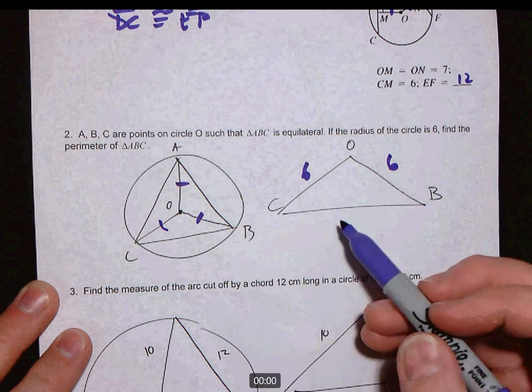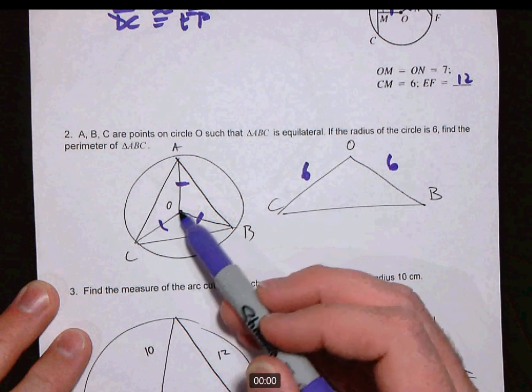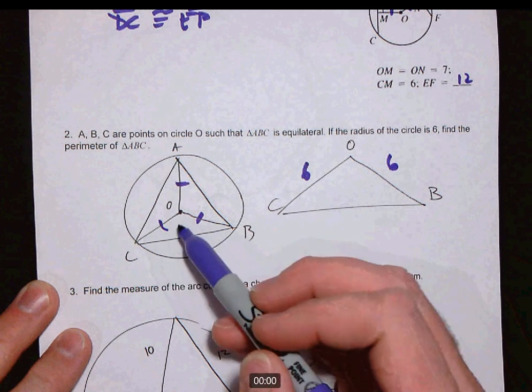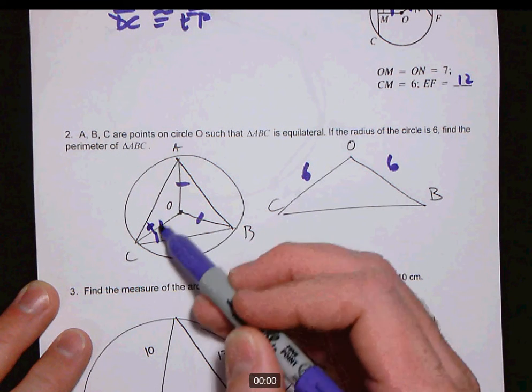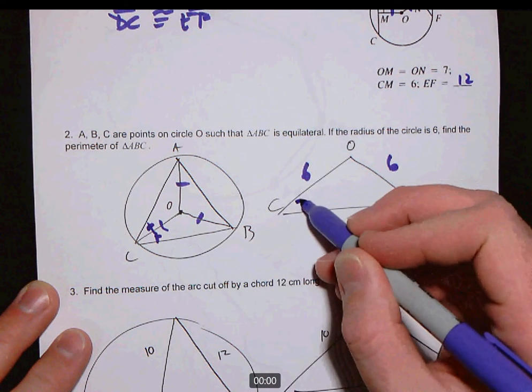And this is equilateral, so since all three of these triangles are congruent to each other, these angles are congruent. In an equilateral triangle, this is 60 degrees, so these are 30 degrees.